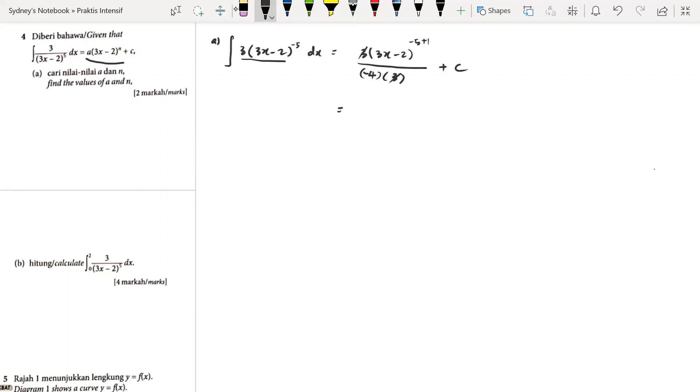After that, we got negative 1 over 4, (3x minus 2) raised to the power of negative 4 plus c. Then we compare with the one given: a(3x minus 2) raised to the power of n plus c. So we will have a equals negative 1 over 4 and n equals negative 4. We have found the answer for part a.